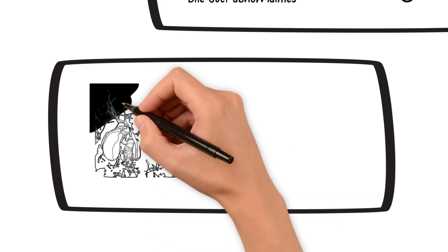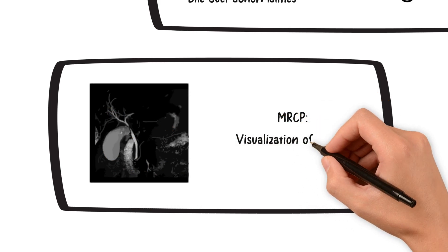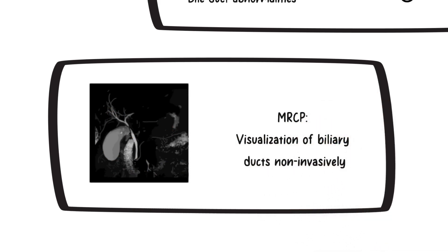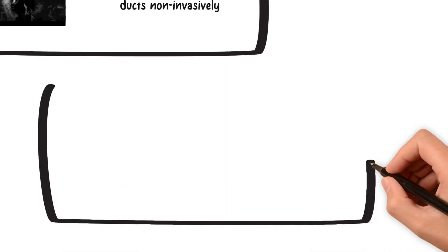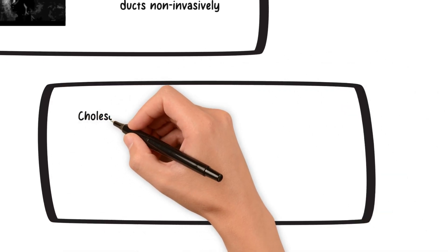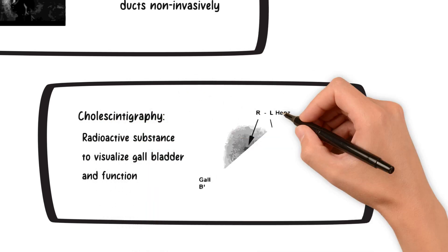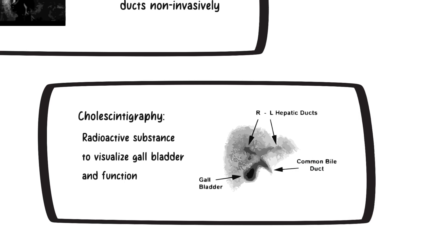In more complex cases, magnetic resonance cholangiopancreatography, or MRCP, may be performed to assess biliary ducts. MRCP is a medical imaging technique that uses magnetic resonance imaging to visualize the biliary and pancreatic ducts non-invasively. Another valuable imaging test is cholescintigraphy, where a radioactive substance is injected to visualize the gallbladder and its functioning.